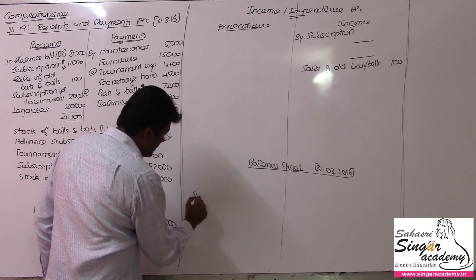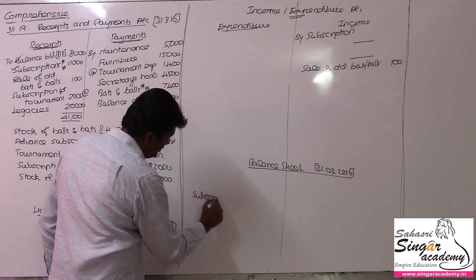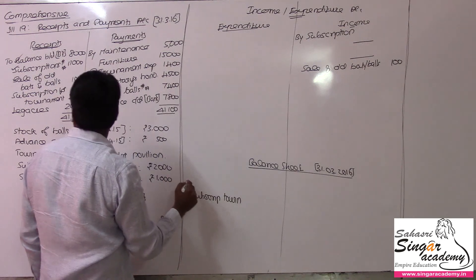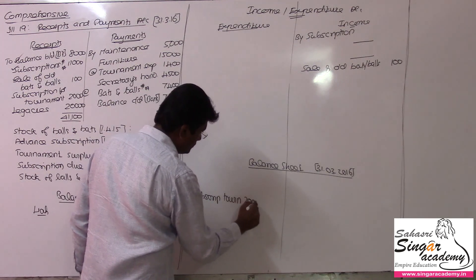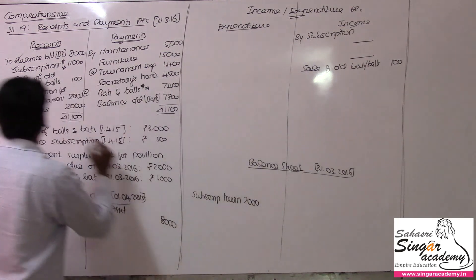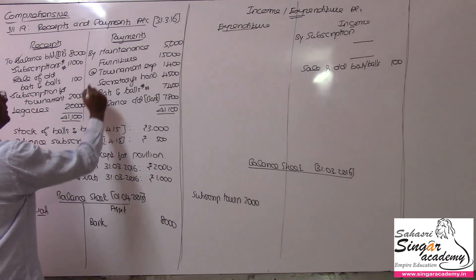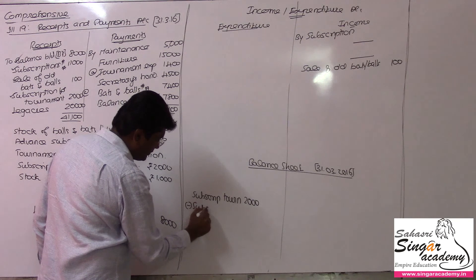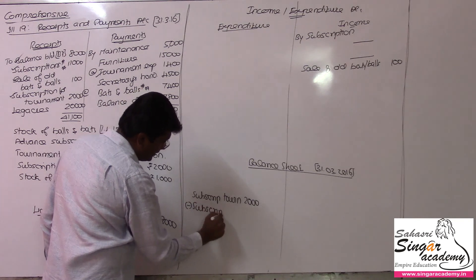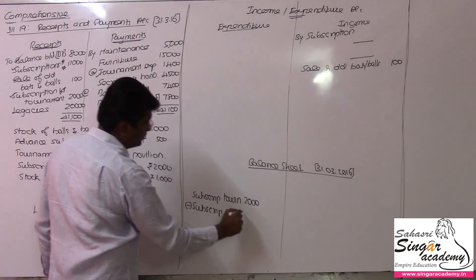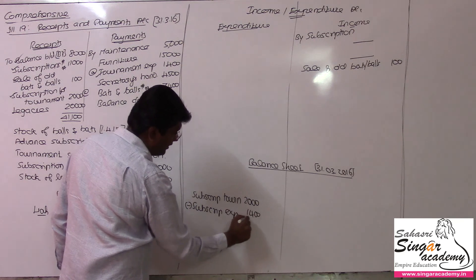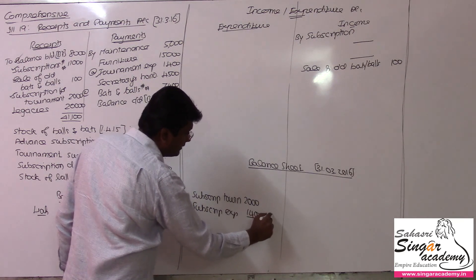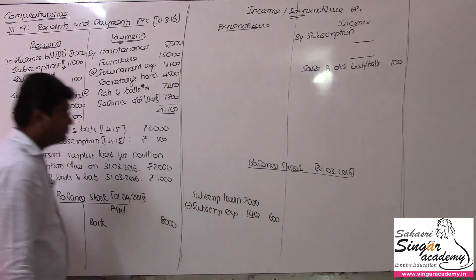Subscription for tournament: income is 2,000 rupees and expenses for that are deductible. Tournament expenses are 1,400. The difference will be kept as the pavilion construction fund.